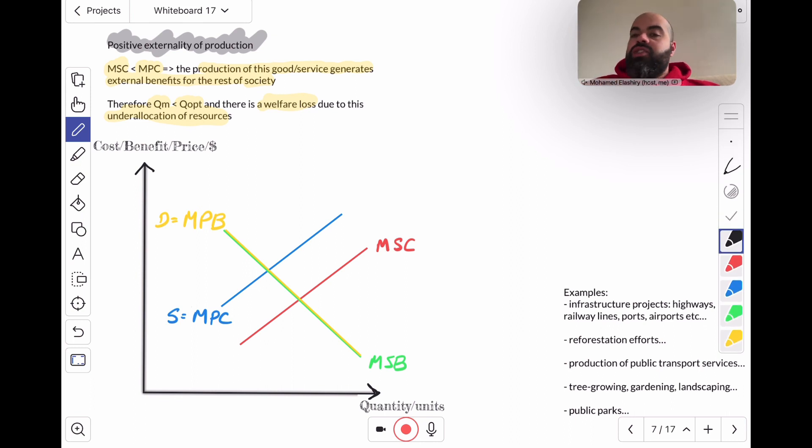Now remember, I stress this in every video, the intersection of MPB and MPC, this one here, will give us the market charged price, PM, and the quantity produced by the market, QM. But the intersection of MSB and MSC, this point here, will give us the point of allocative efficiency, where we can get QOpt, the socially optimum quantity, and POpt, the socially optimum price.